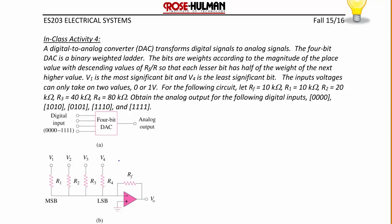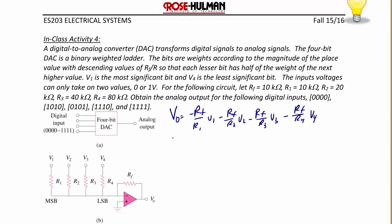This op amp circuit is a summing amplifier. V_O equals negative R_F over R1 times V1, minus R_F over R2 times V2, minus R_F over R3 times V3, minus R_F over R4 times V4. Substituting the resistor values gives V_O equals negative V1, minus one-half V2, minus one-fourth V3, minus one-eighth V4. Remember, the most significant bit is V1, so the inputs are ordered V1, V2, V3, V4.